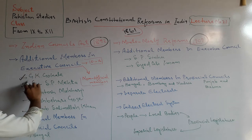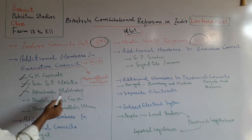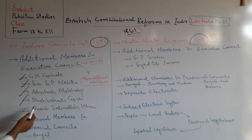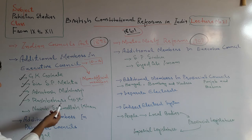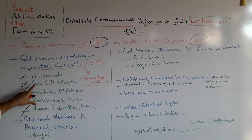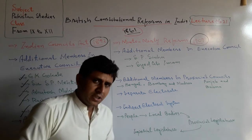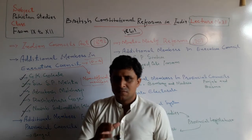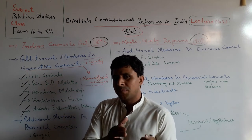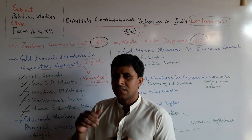Major Indian leaders in the Indian Council included Gokhale, Sir S.P. Mehta, Surendranath Banerjee, Asutosh Mukherjee, Rishbhari Ghosh, and Nawab Salimullah Khan. These were major leaders of the Indian council members. Dear friends, additional members were not only in executive councils — Indians were also included in provincial councils under the governor.